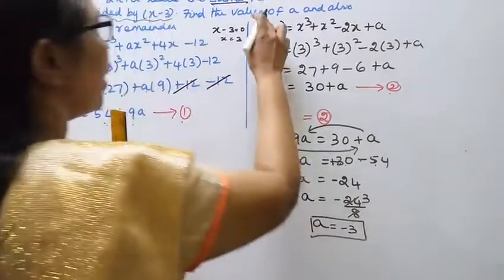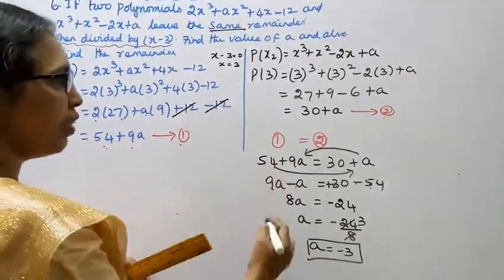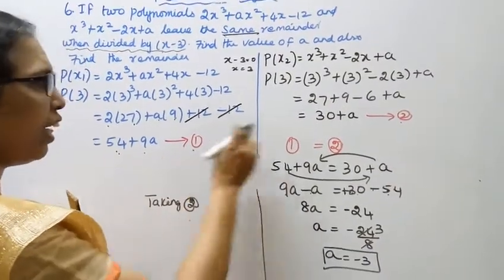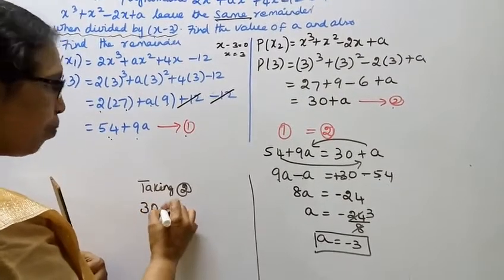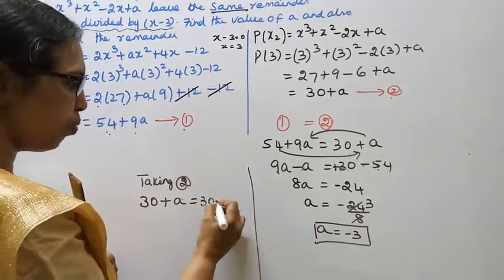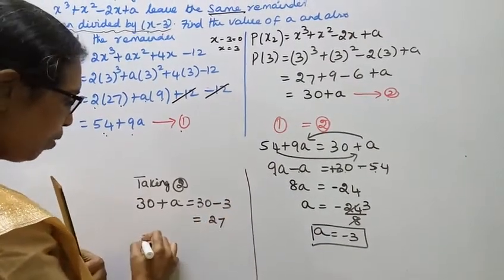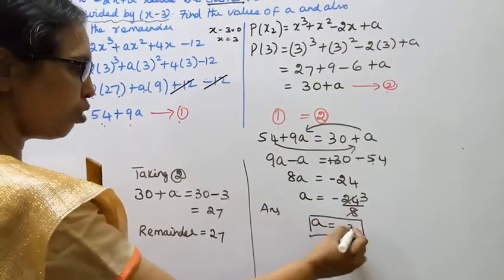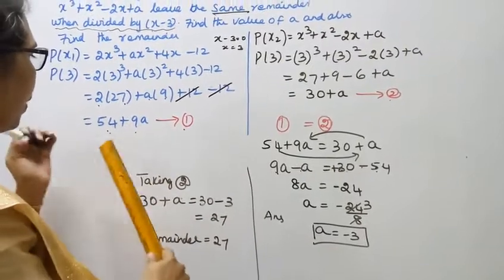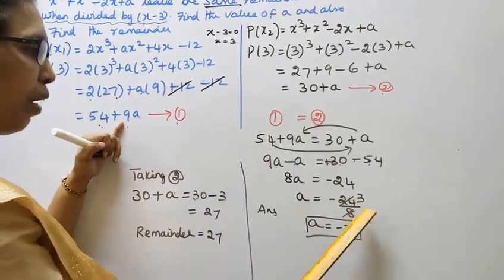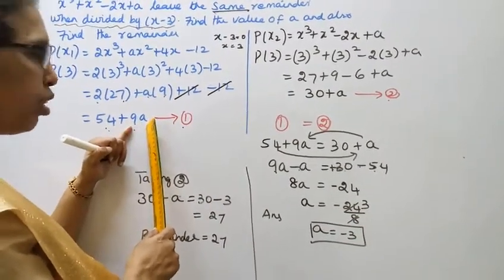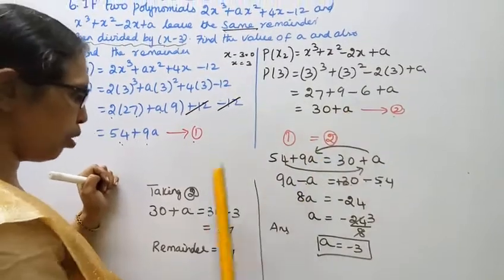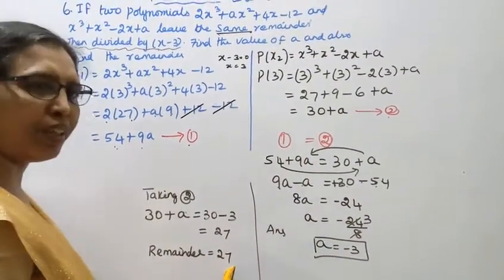Now find the remainder by substituting a = -3 into the second polynomial expression: 30 plus a equals 30 plus minus 3 equals 27. We can verify using the first polynomial: 54 plus 9 into minus 3 equals 54 minus 27 equals 27. So the remainder equals 27.